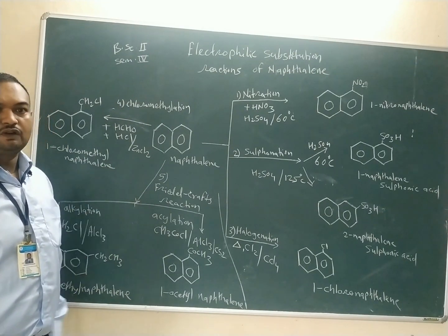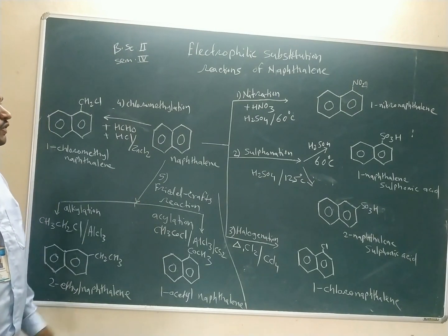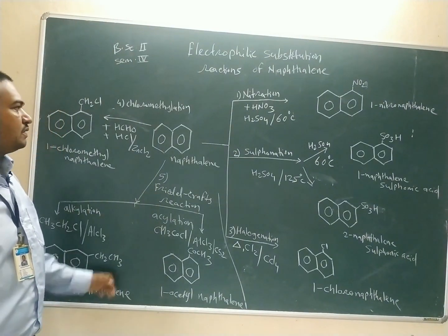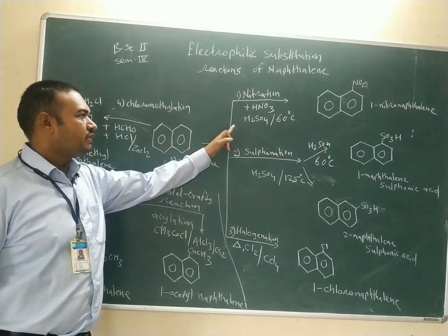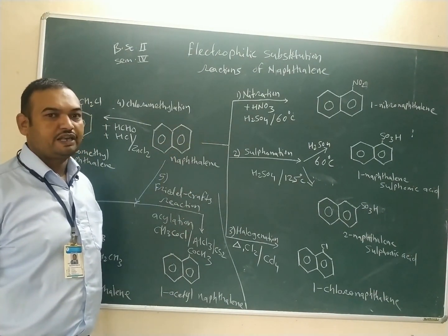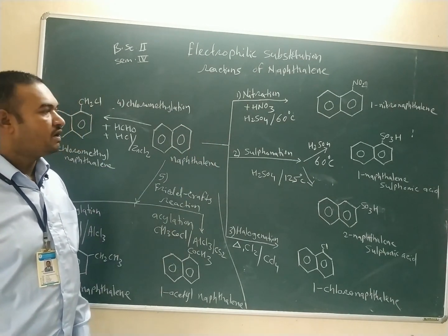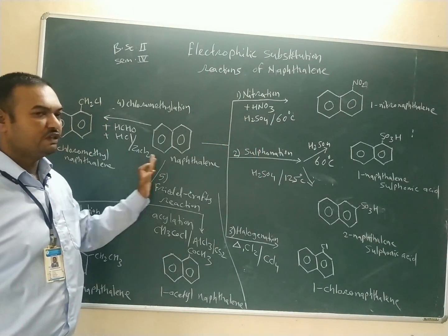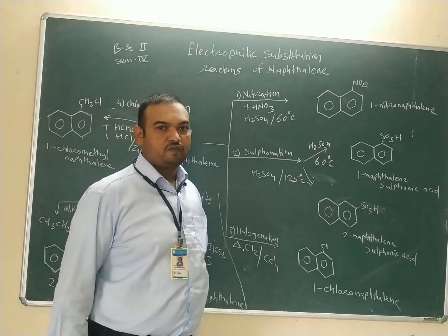We will discuss a few reactions of electrophilic substitution of naphthalene. First reaction is nitration. Nitration of naphthalene is carried out with nitric acid in the presence of sulfuric acid. At 60 degree Celsius, nitric acid reacts with naphthalene to form 1-nitronaphthalene.